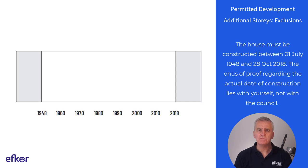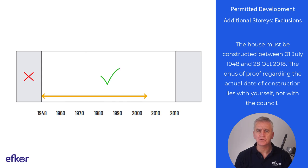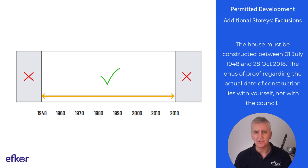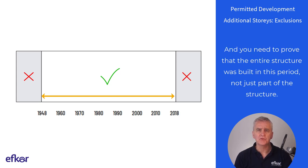The house must be constructed between 1st of July 1948 and 28th of October 2018. The onus of proof regarding the actual date of construction lies with yourself, not with the council. And you need to prove that the entire structure was built in this period, not just part of the structure.